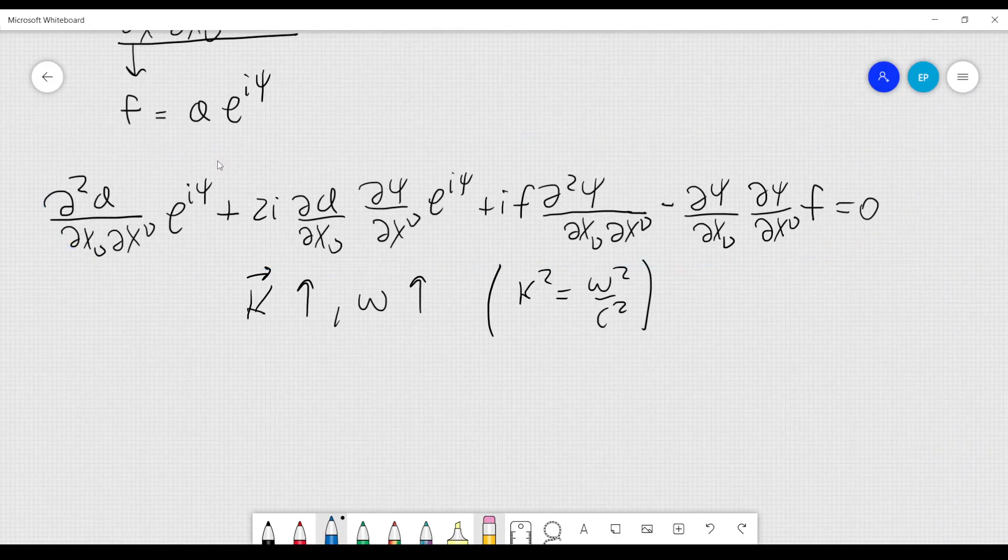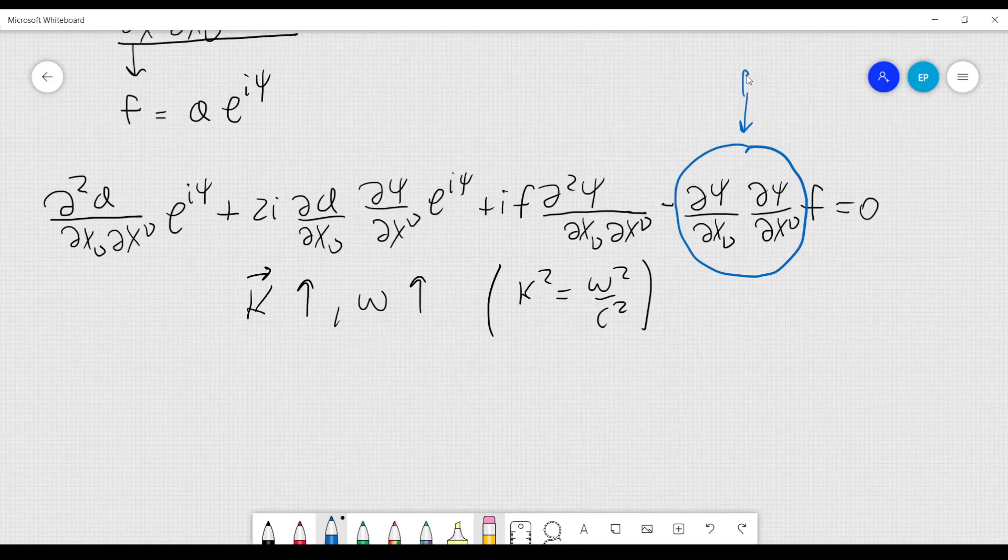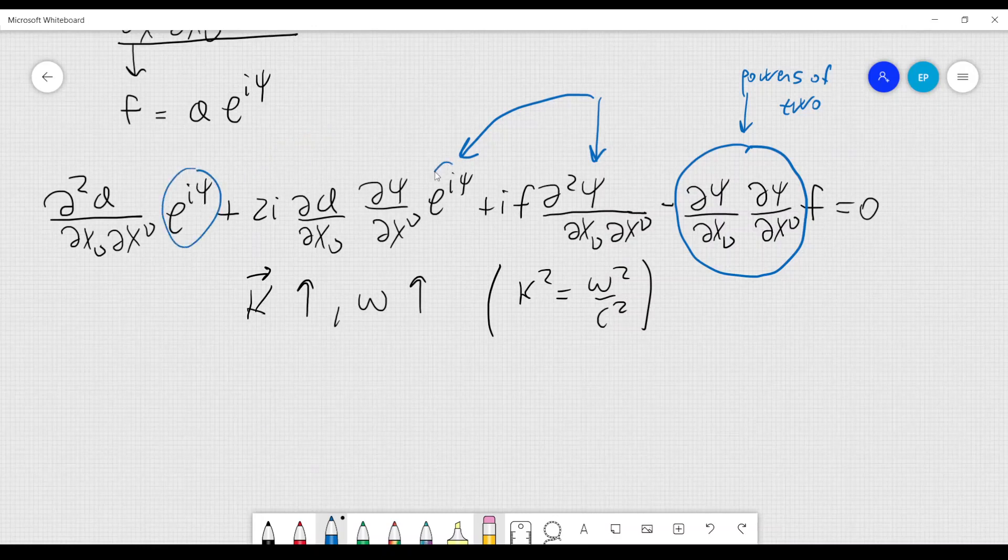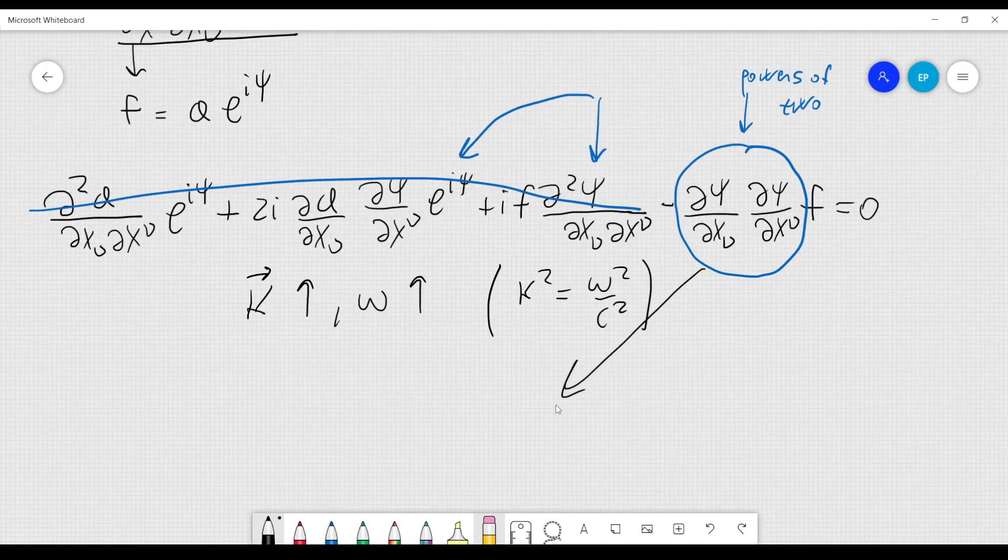And this means that in this expression here, there are some terms that are negligible. The only term that will be non-negligible is this one, because it contains powers of 2 of the function psi, whereas this term only contains the first power as well as this one, whereas this one here does not contain any power of psi. And I'm not considering these complex exponentials here, because they are just oscillatory terms. Therefore, it means that if we can neglect this part, it means that this would have to be zero.